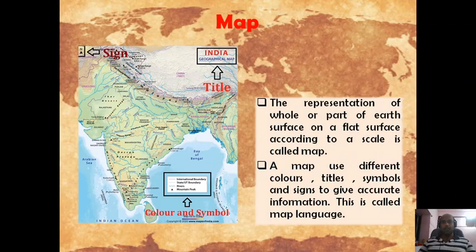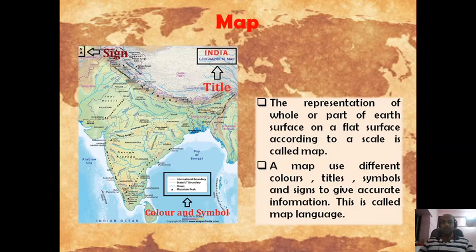What is a map? The representation of the whole or part of the earth surface on a flat surface according to a scale is called a map. Simply put, a map is the projection of a three-dimensional earth surface on a two-dimensional piece of paper. A map uses different colors, titles, symbols, and signs to give accurate information — this is called map language.